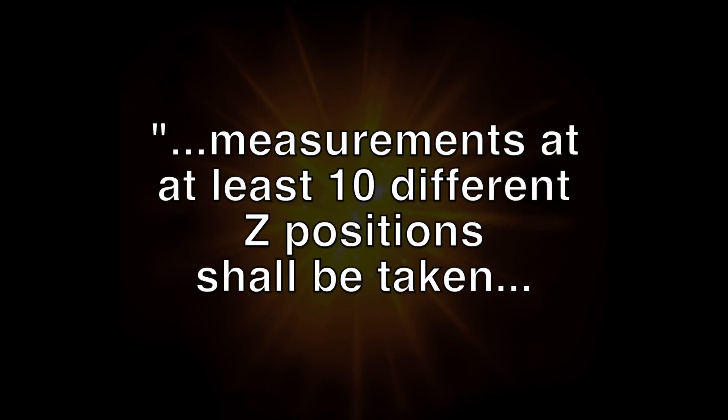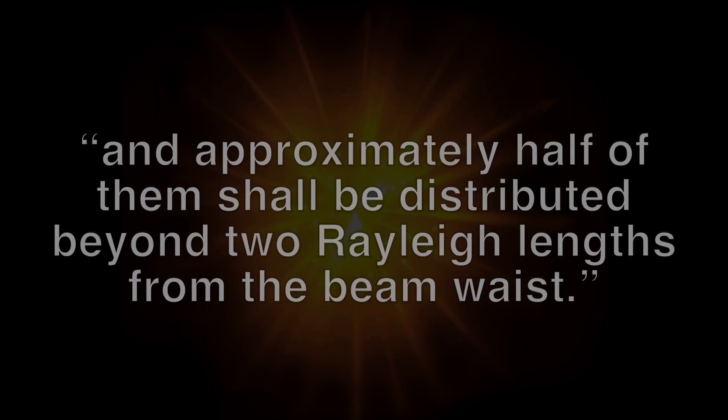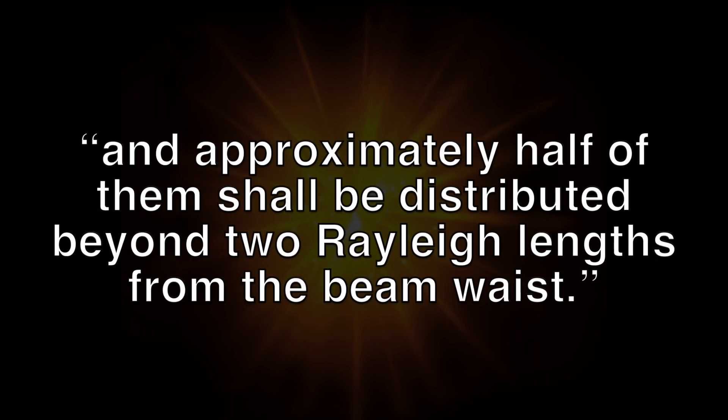As the ISO document 11146 states, measurements at at least 10 different Z positions shall be taken. Approximately half of the measurements shall be distributed within one Rayleigh length on either side of the beam waist and approximately half of them shall be distributed beyond two Rayleigh lengths from the beam waist.